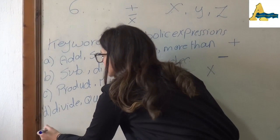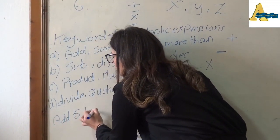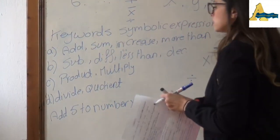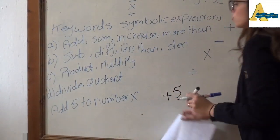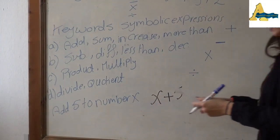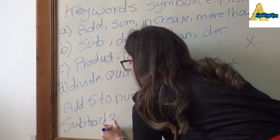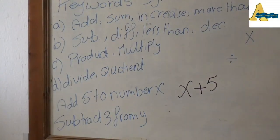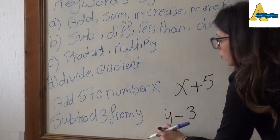Let's see. First, if he said 'add 5 to number x': 'add' means plus, add 5, to x — so the expression is x + 5. Another example: if he said 'subtract 3 from y': subtract means minus, that means minus 3, from y — so the expression is y - 3.